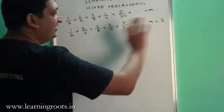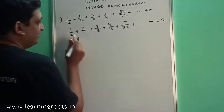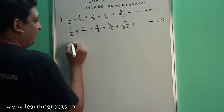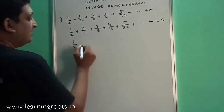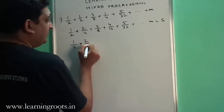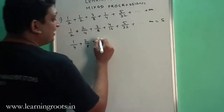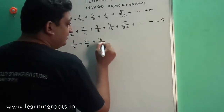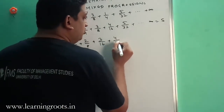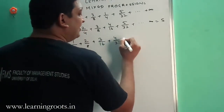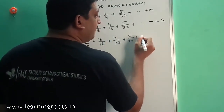So let's multiply everything by 1/2, which is the common ratio. Then 1/2 becomes 1/4, 2/4 becomes 2/8, 3/8 becomes 3/16, 4/16 becomes 4/32, and 5/32 becomes 5/64 and so on.